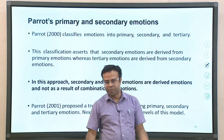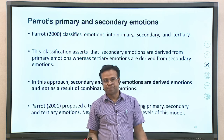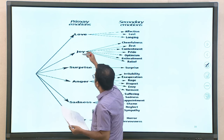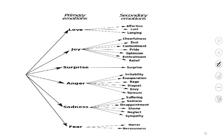Parrott proposed a tree-like structure showing primary, secondary, and tertiary emotions. The primary emotions are love, joy, surprise, anger, sadness, and fear. From love, other secondary emotions can arise — like affection, lust, and longing — and from each of these, tertiary emotions can arise. Anger can lead to secondary emotions like irritability, rage, disgust, envy, and torment. Sadness can lead to suffering, disappointment, shame, neglect, and sympathy. Fear can lead to horror and nervousness, which are secondary emotions.